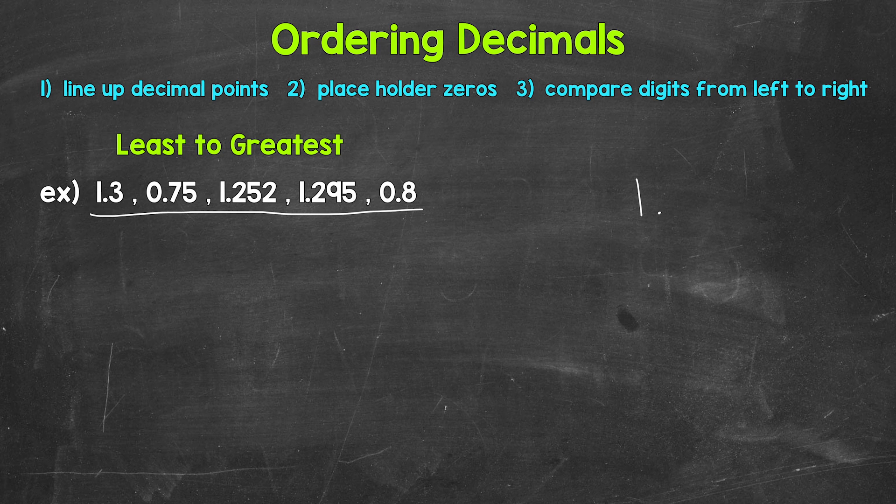So we'll start with 1 and 3 tenths. Then we have 75 hundredths. Then we have 1 and 252 thousandths.